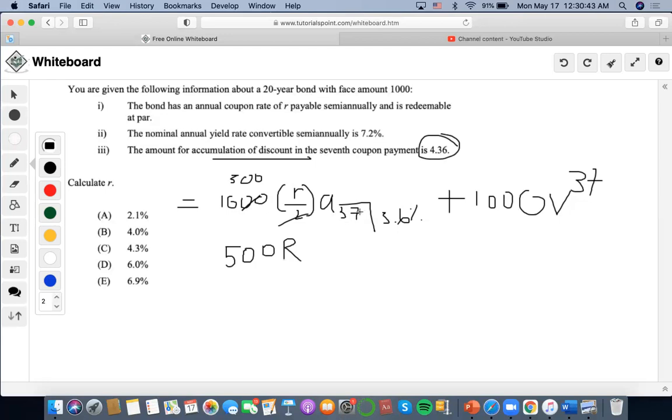Oh wait, I don't know why I put 37. It's because I'm talking about the seventh coupon. I'm supposed to do 40 minus 7, which is 33. I'm sorry about that. So, excuse me.